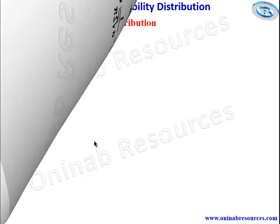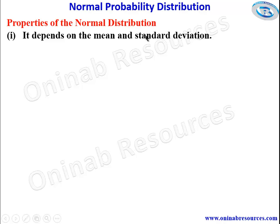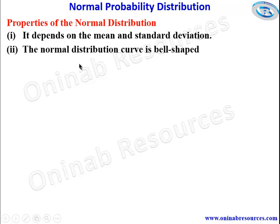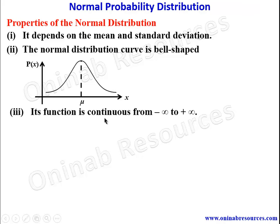We look at the properties of the normal distribution. First, it depends on the mean and standard deviation. The normal distribution curve is bell-shaped, as shown in the diagram here — bell-shaped with a symmetrical line at the mean. Its function is continuous from negative infinity to positive infinity.